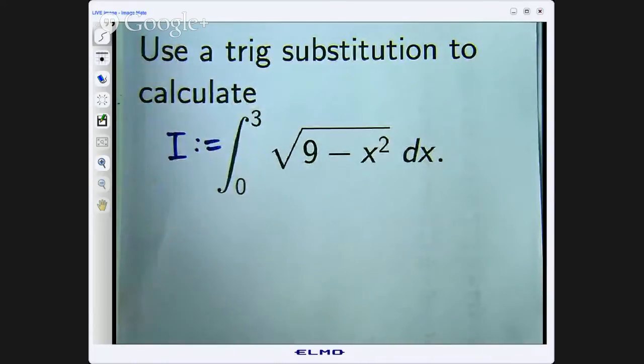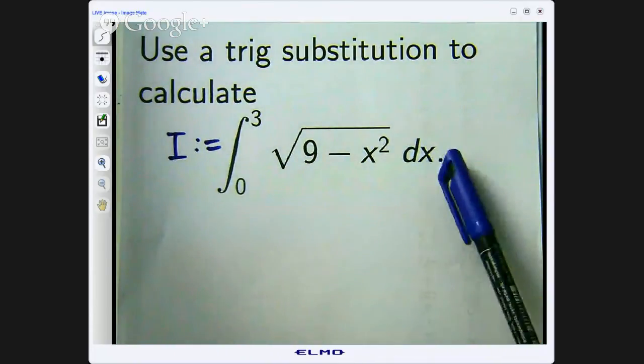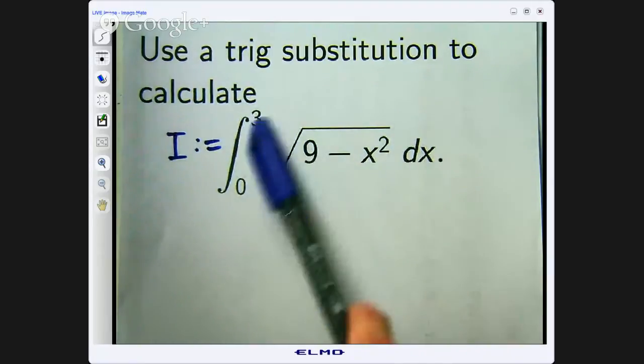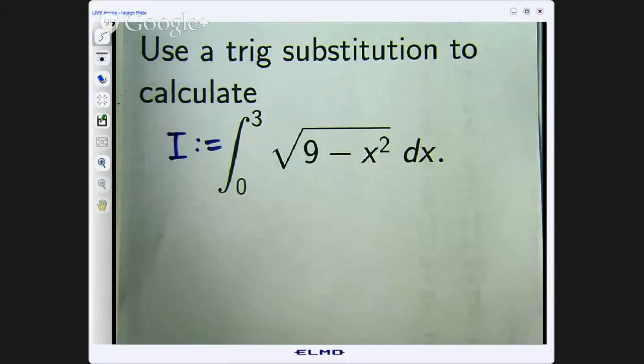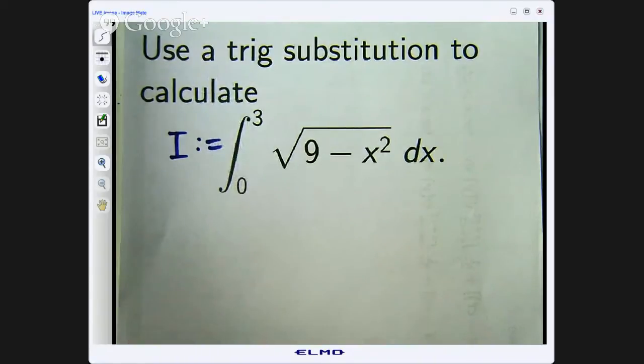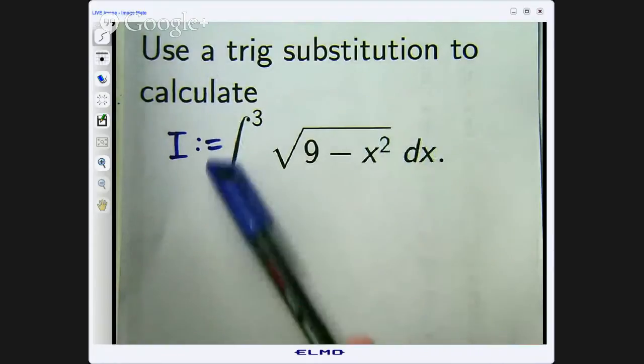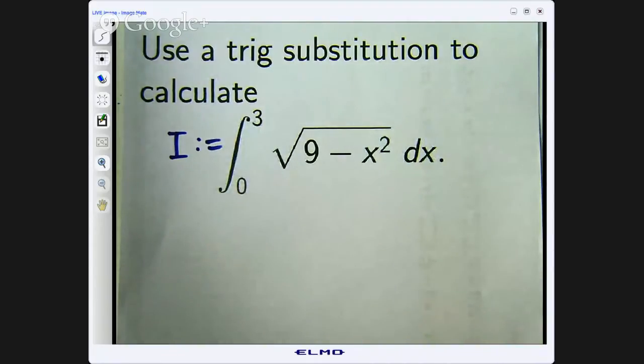Now the geometrically minded people watching will go come on Chris you do not need a trig substitution to calculate this I can just do it by geometry. It is a quarter of a disk or a quarter of an area of a quarter of a circle. Yes we will look at that a bit later but we are going to carry out what we are asked to do. Use a trig substitution to calculate this integral the value of I. Alright so how do we do it.